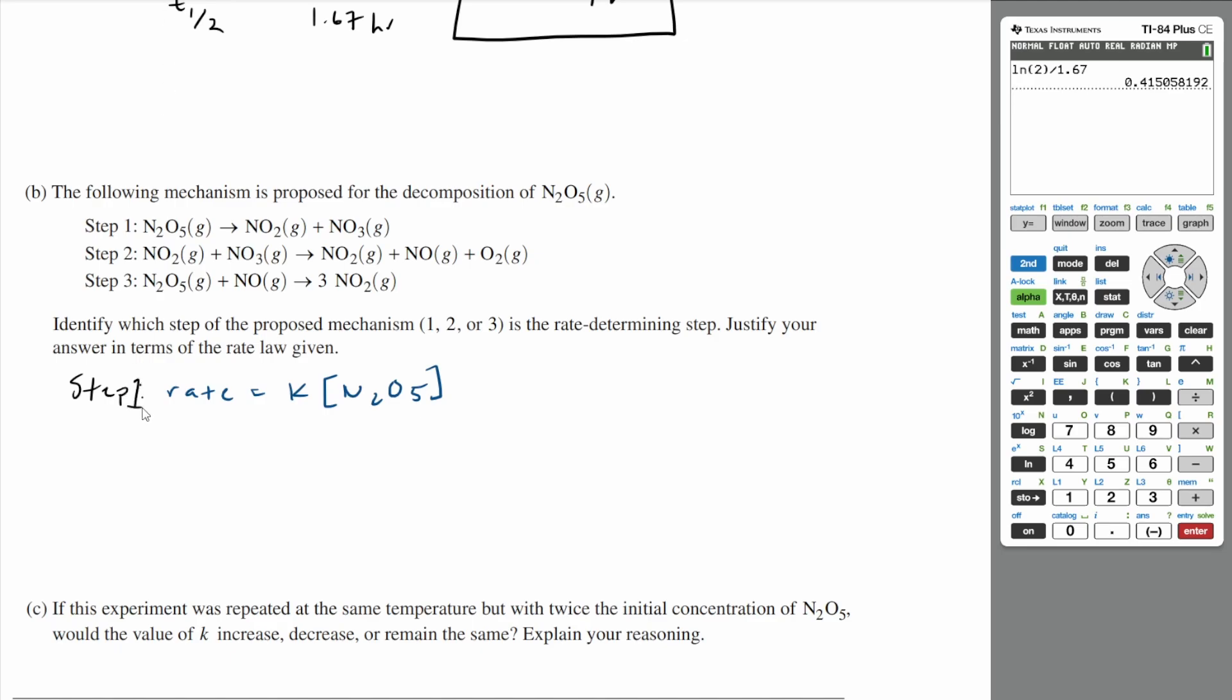If you do the other steps, so step two, you'll get different rates. So since these are elementary reactions, our elementary steps, we can just keep these the same. We don't really have to change them. So it's going to be NO2 times NO3. And then step three, it's going to be a similar step. So rate is equal to k times N2O5 times NO.